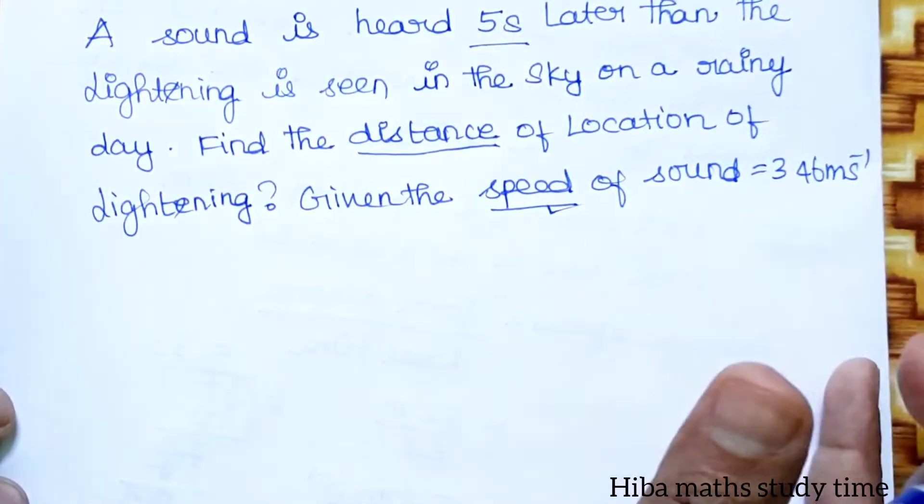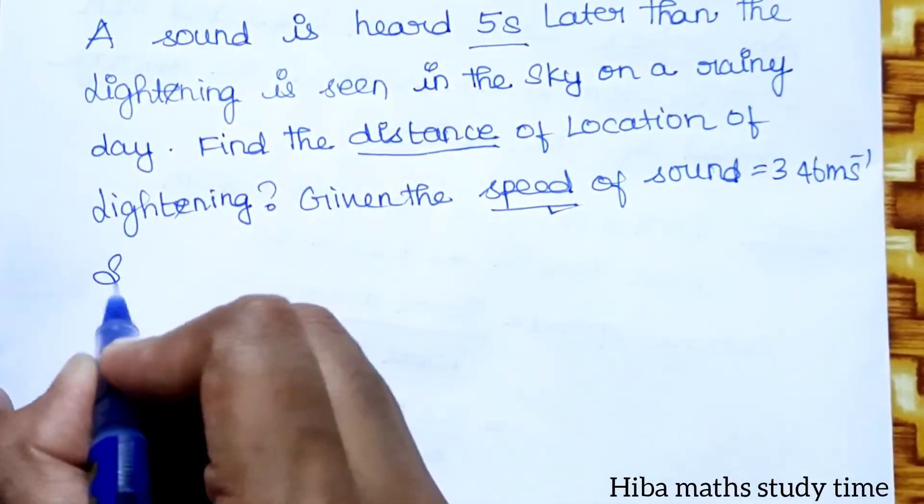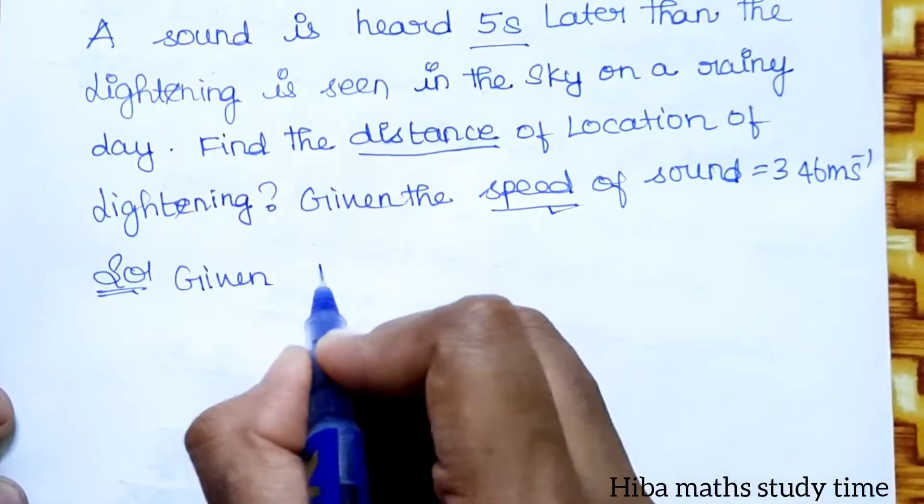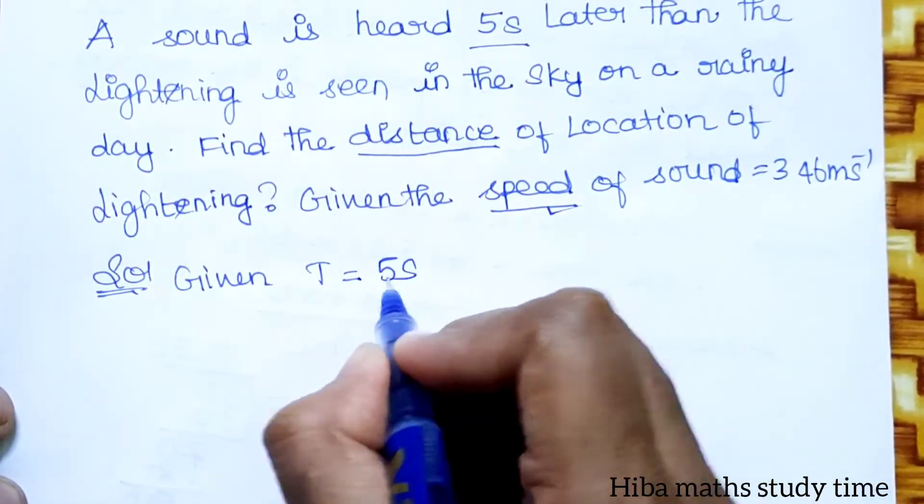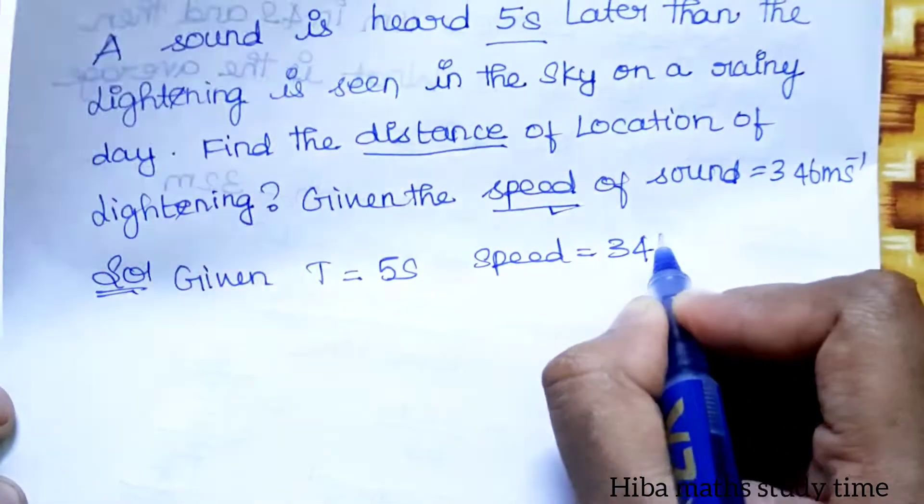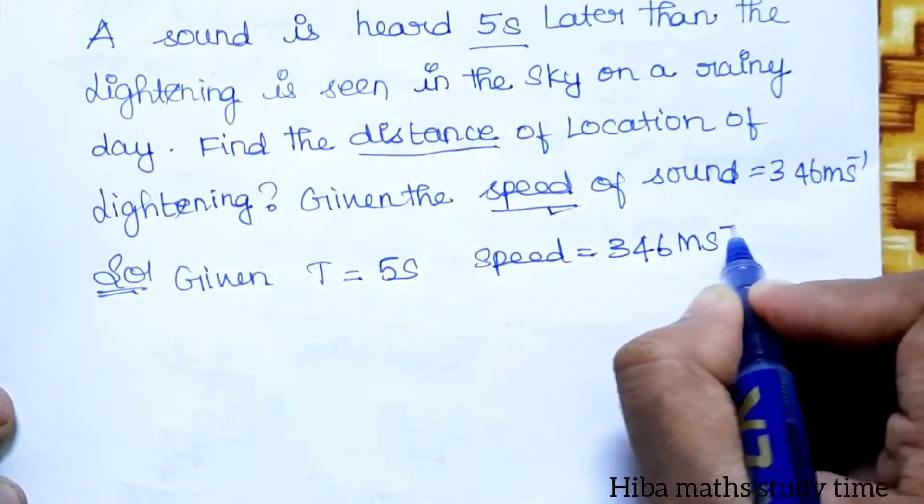If you want to substitute the given values in the formula, the answer will be given. In the solution, the time is 5 seconds, speed is 346 meter per second.